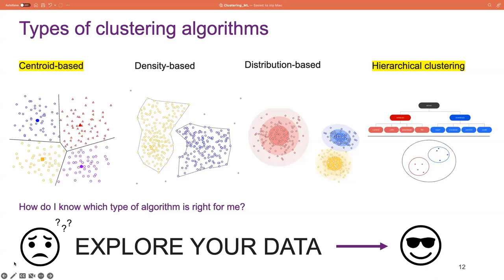That's a lot of information to take in. We will be going through centroid-based and hierarchical in more depth. But you might be wondering how to decide on a type of algorithm. My main advice is to explore your data first — this will help you weed out the less suitable algorithms. You might want to determine if your data falls into a predefined distribution; if not, that rules out distribution-based algorithms. Or if you're working with a large dataset, you might want to avoid hierarchical clustering. I also recommend trying out a few different types — there are loads of great machine learning packages that are easy to implement, so you could try different types and compare the results.